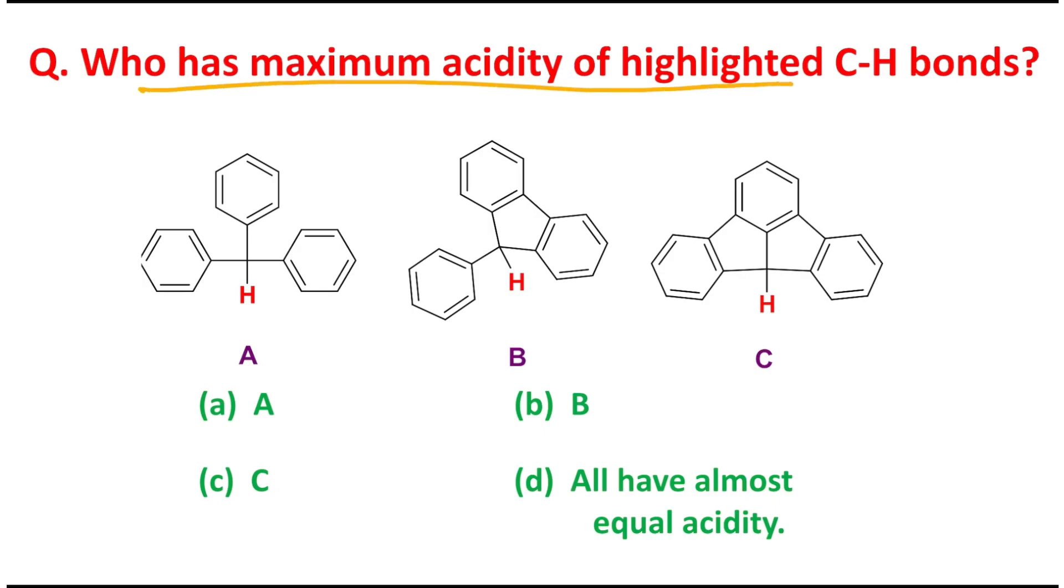Question is who has the maximum acidity in the highlighted C-H bond? What do I mean? You can see one C-H bond here, another is here, another is here. You have to say who has the maximum acidity. Four options are provided and one of them is the right answer. I request you student, please pause the video, try by yourself and whatever answer you get, please write in the comment box along with few words as explanation. Don't hesitate whether your answer will be right or wrong because student, self-evaluation is essential for improvement and that's why you should try.